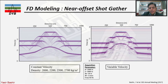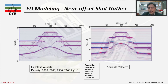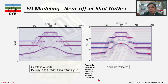We consider two different modeling approaches: constant velocity and variable density. In this model we use different densities — 2000, 2200, 2500, and 2700 grams per cubic meter. The acquisition parameters are: distance of 1000 meters in the x-direction, depth of 3000 meters, receiver interval dx of 10 meters, sampling interval of 2 ms, and dominant frequency of 50 Hz.